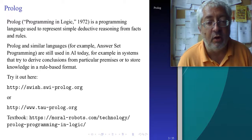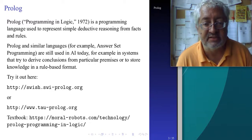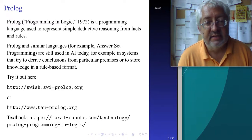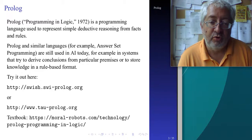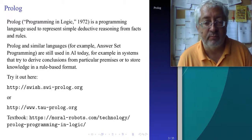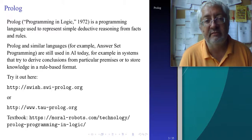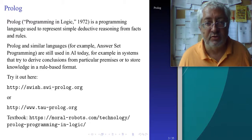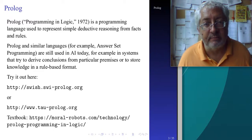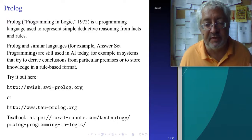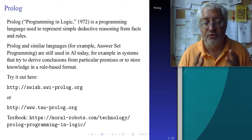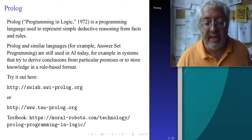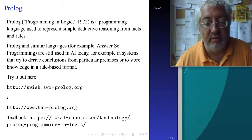Prolog is a relatively old programming language - it was developed in 1972, and it is still used today, along with similar languages that have developed from it. It is used whenever you have a symbolic, logical, or rule-based processing task: for example, when you want to derive some conclusions from premises in a logical way.